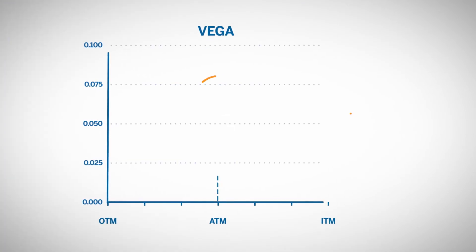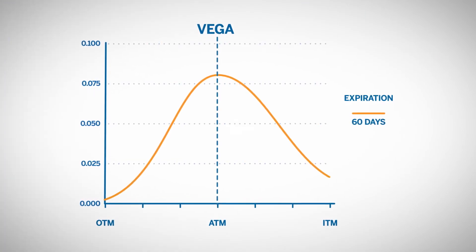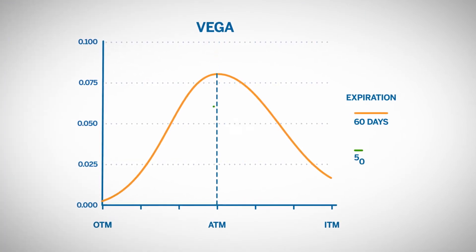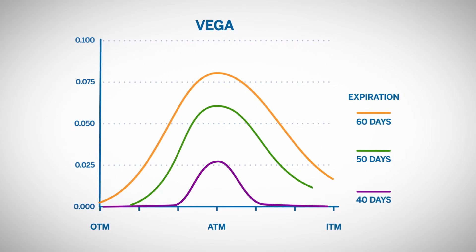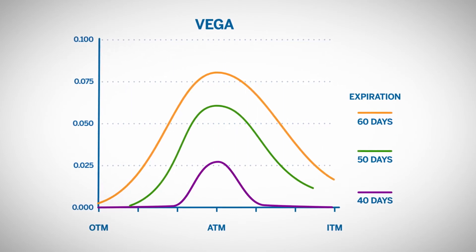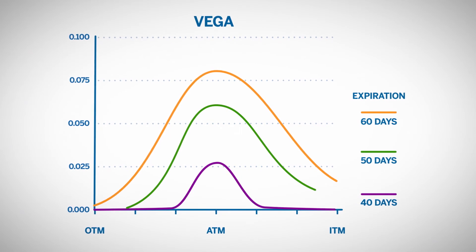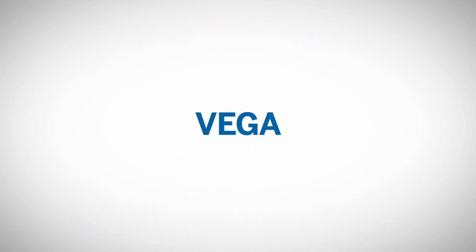Vega is the highest when the underlying price is near the option's strike price. Vega declines as the option approaches expiration. The more time to expiration, the more Vega in the option. If you're going to trade options, Vega is a measurement you will want to study.